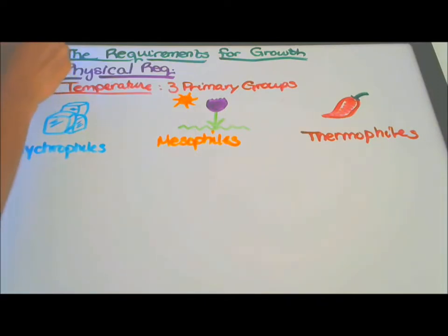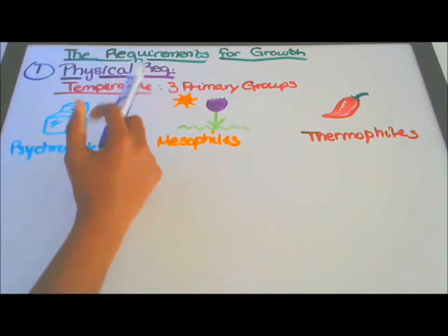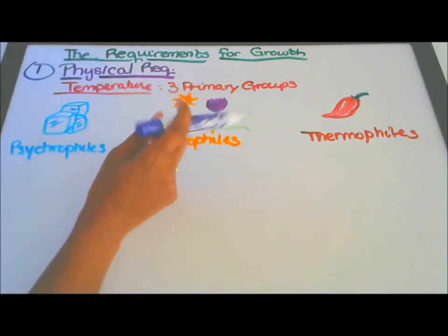So this is number one: temperature, three primary groups.